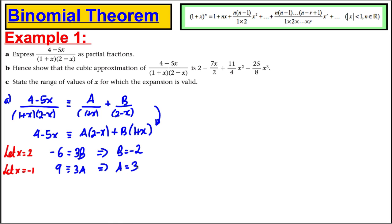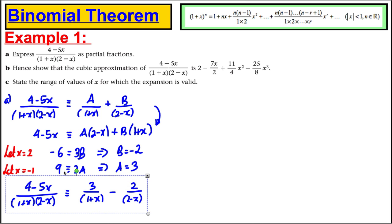And as such, we'd be done in that regard. So, we can write this as partial fractions. 4 subtract 5x all over 1 plus x times 2 subtract x. State your final answer - it's very important to show the examiner what you've done. It's therefore equal to 3 over 1 plus x subtract 2 over 2 subtract x. And we're done. So that's part A, nicely done.